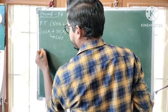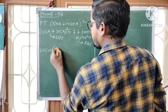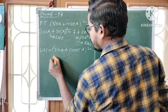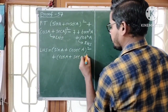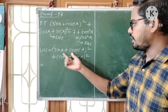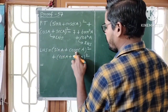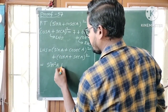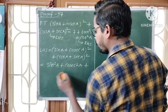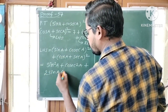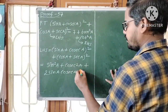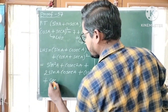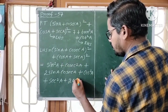LHS is equal to (sin a + cosec a)² + (cos a + sec a)². Let us expand the first term and second term. Using (a + b)² formula: sin²a + cosec²a + 2·sin a·cosec a. Now expand the second term: cos²a + sec²a + 2·cos a·sec a.